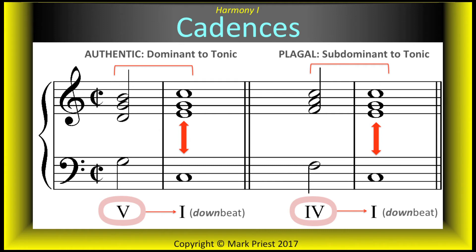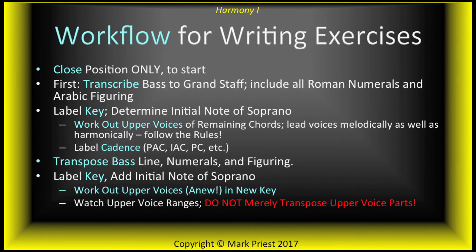Cadence comes from a Latin verb meaning to fall, and we learned about two types of cadences: authentic and plagal. We also had an assignment to transpose both types of cadences to several major keys. This was our basic workflow for working out and transposing four-part writing exercises.